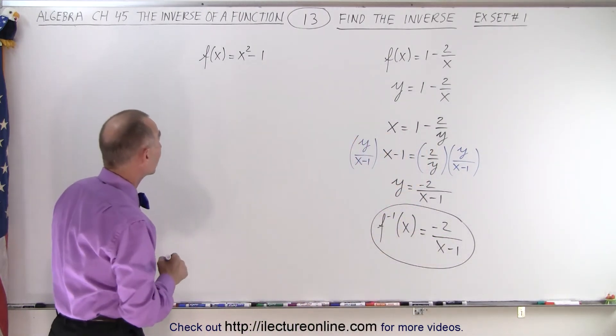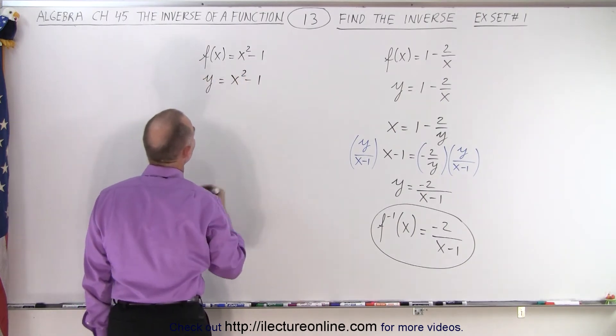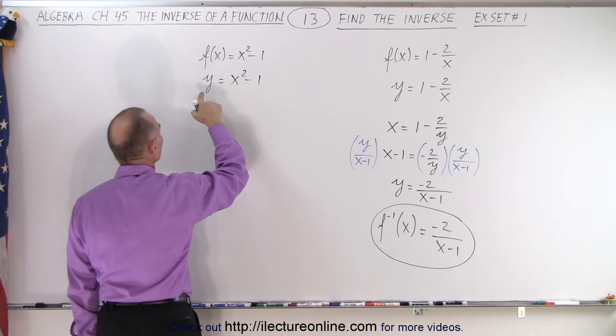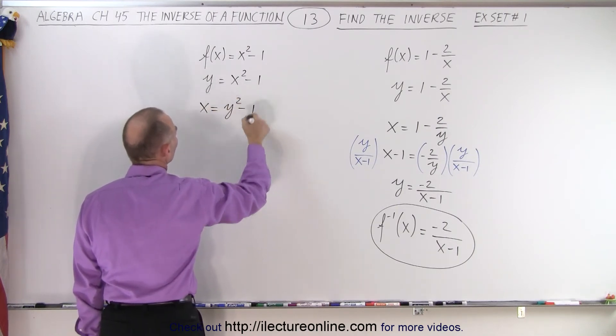So we do the same over here. Again, we first write it as y equals x squared minus 1. And then we replace every y, we turn it into an x, and every x into a y. So this is x equals y squared minus 1.